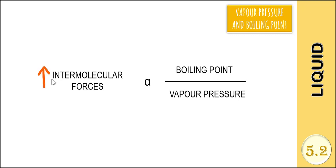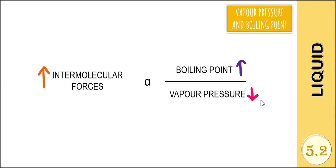The stronger the intermolecular forces, the higher the boiling point and the lower the vapor pressure. A less volatile liquid will have stronger intermolecular forces of attraction, meaning more energy is needed to overcome the attraction forces between the molecules. It will be difficult for the liquid molecules to escape as vapor, so the vapor pressure is lower and more energy is needed to boil the liquid, thus the boiling point is higher.